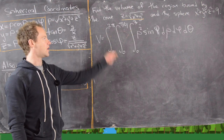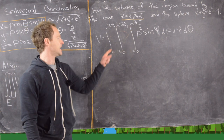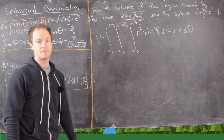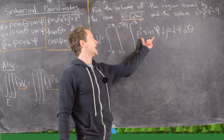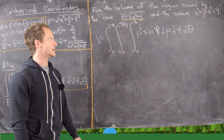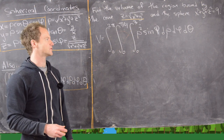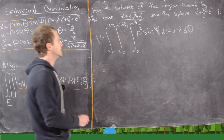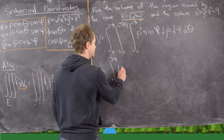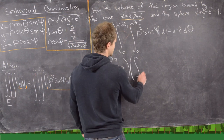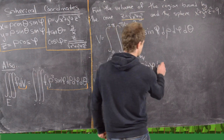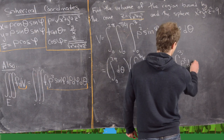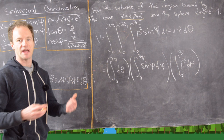We've got our volume as this iterated integral: θ from 0 to 2π, φ from 0 to π/4, ρ from 0 to 3. Notice the integrand is a function of ρ times a function of φ times a trivial function of θ. So we can split this into three separate integrals: (∫₀²π dθ) × (∫₀^(π/4) sinφ dφ) × (∫₀³ ρ² dρ).